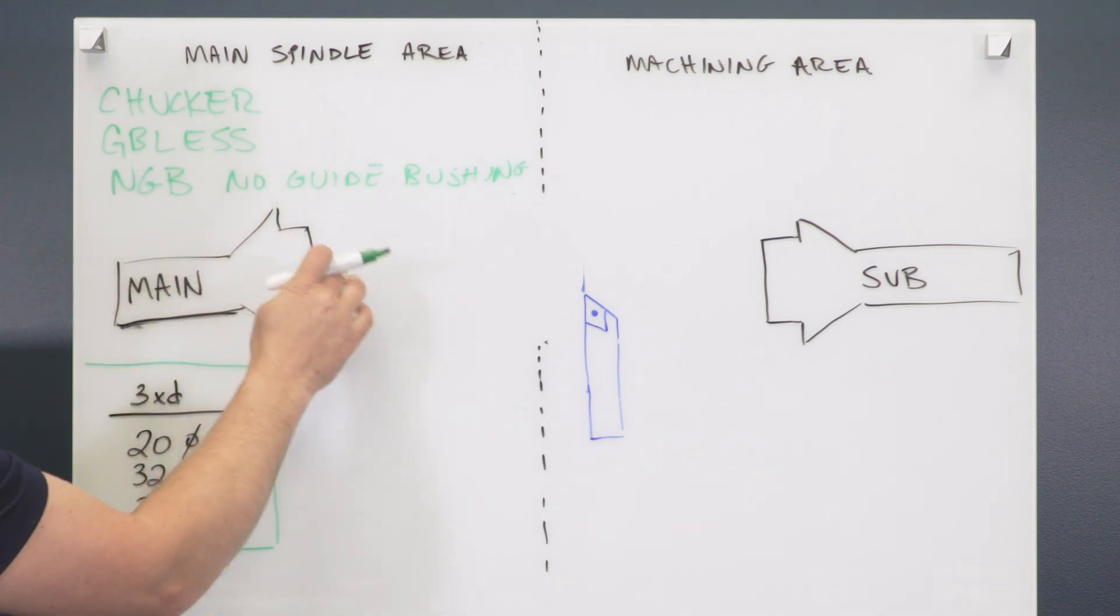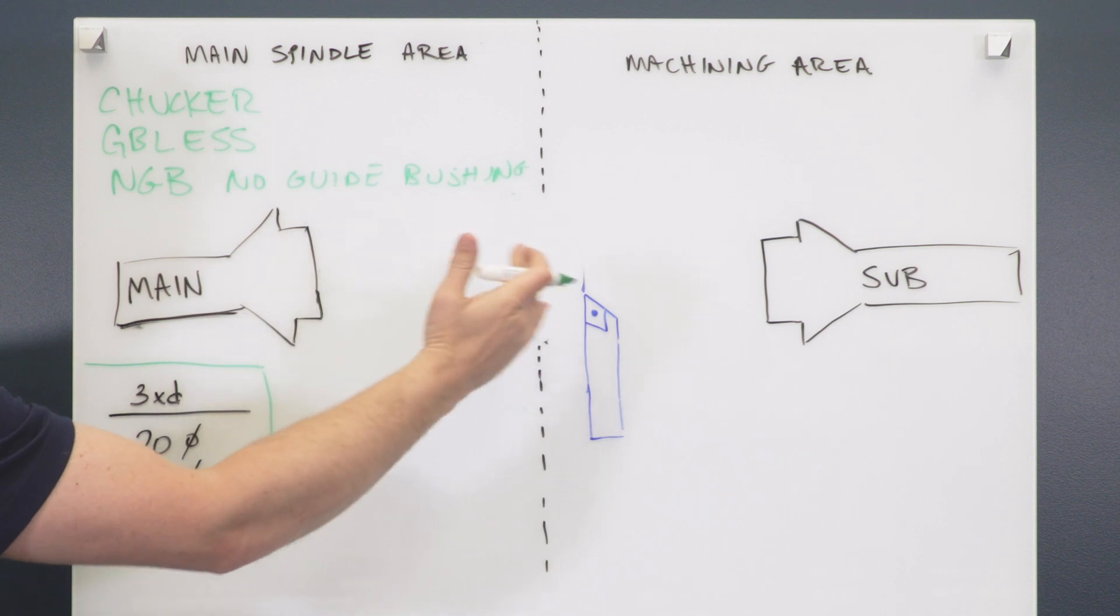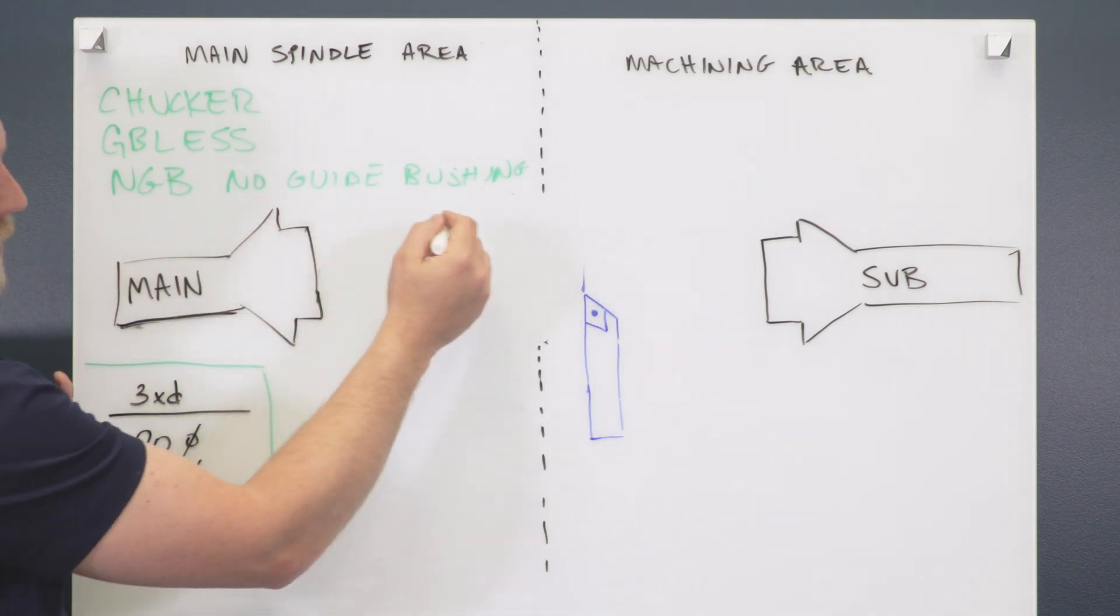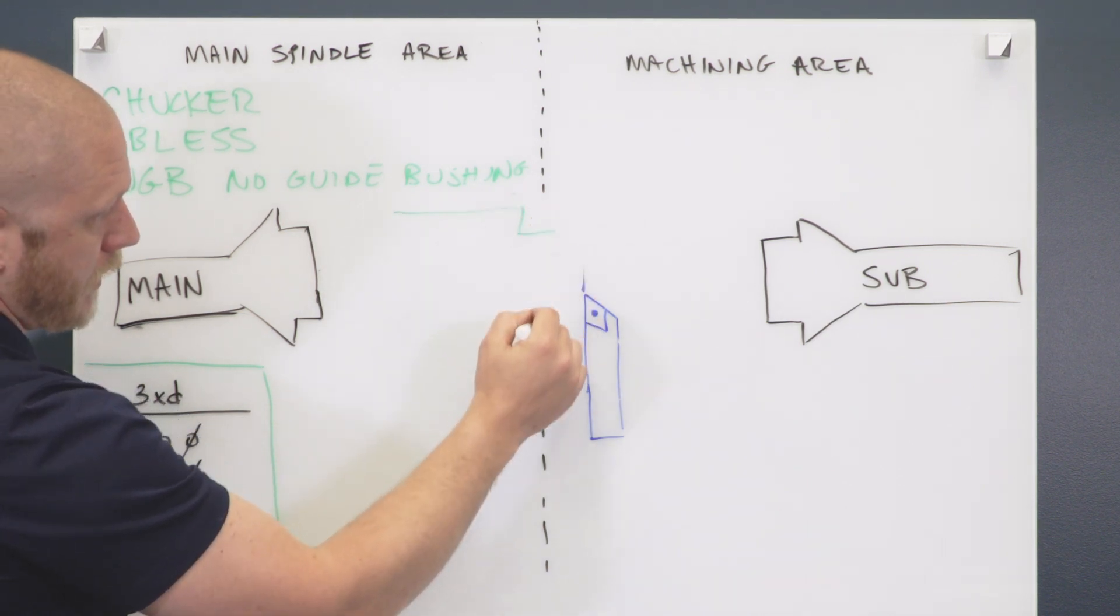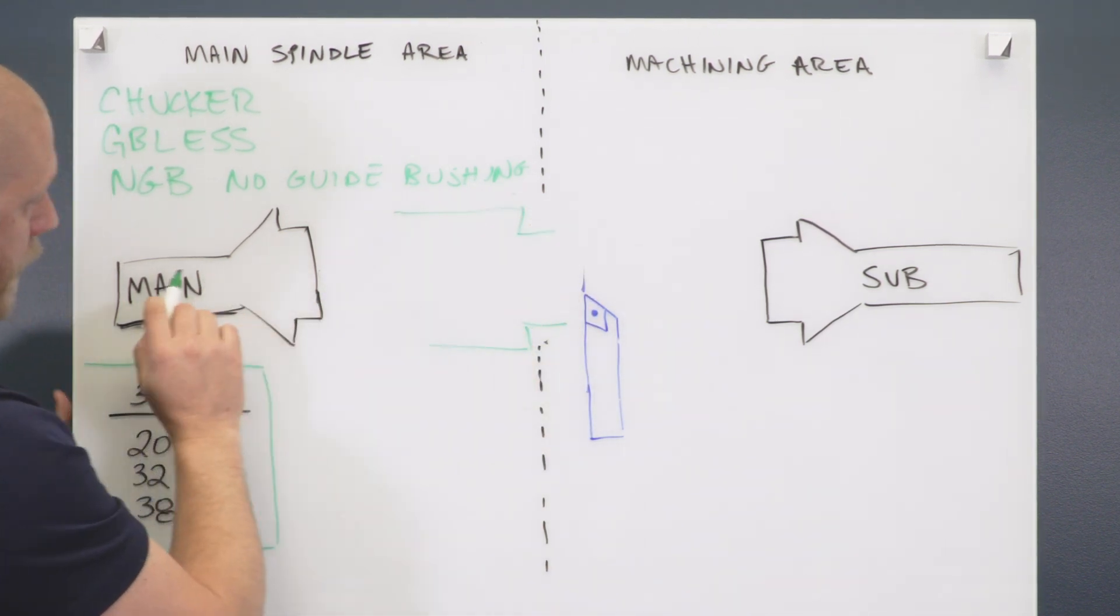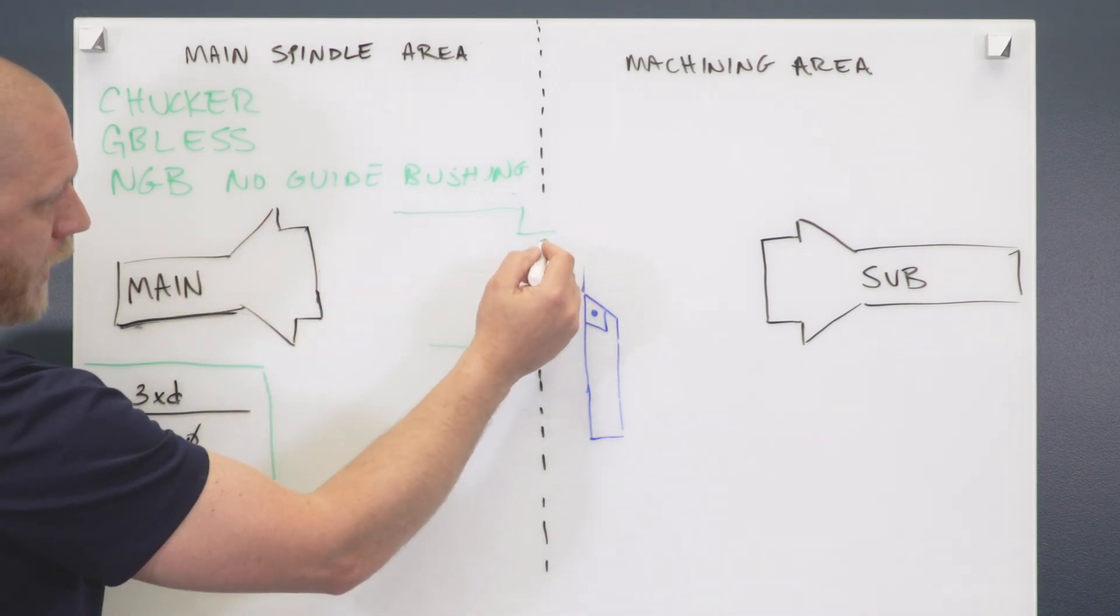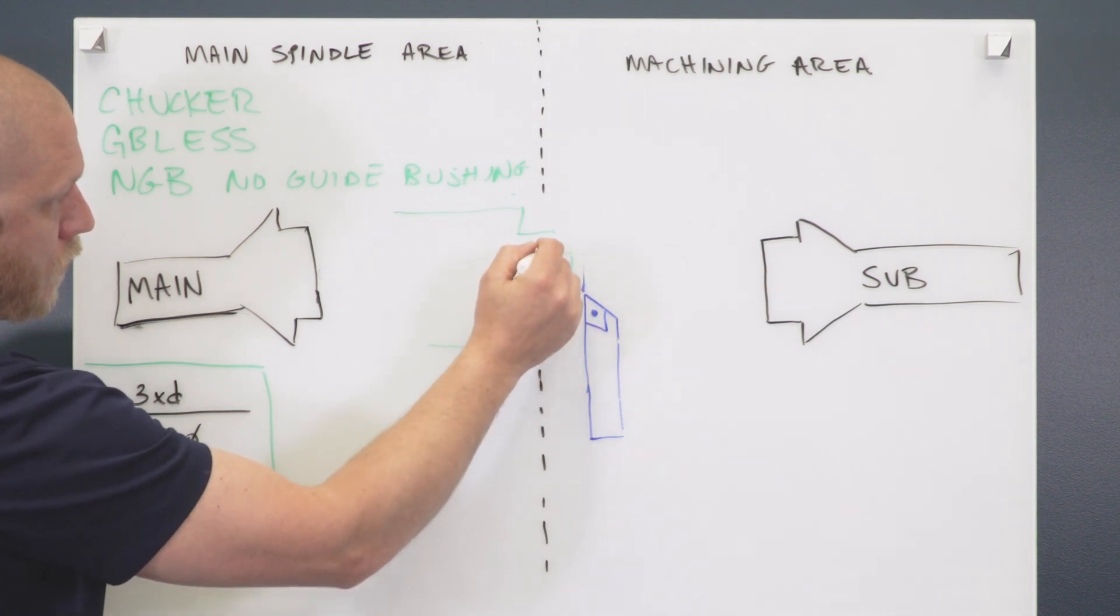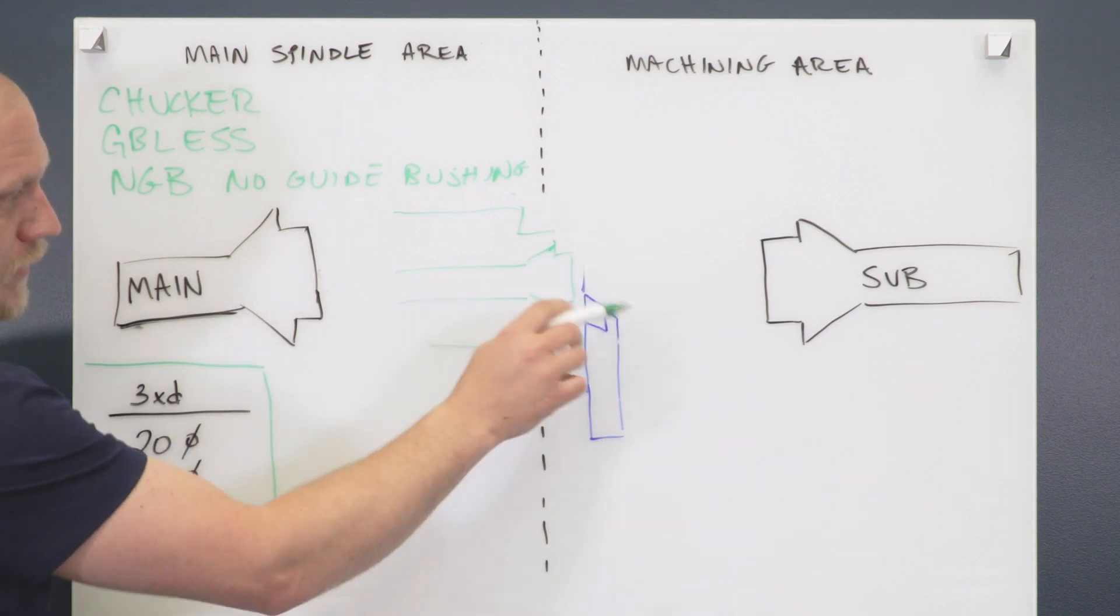Typically in our Swiss machines, we have a main spindle area and our main spindle stays in that main spindle area at all times. What this is allowing us to do is it creates a bushing here, and it allows us to bring that main spindle collet all the way up to the front. Now we're machining with the main spindle collet right here in the tooling zone.